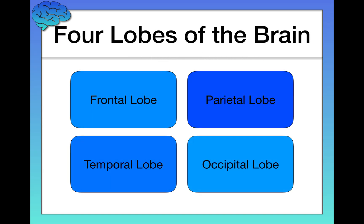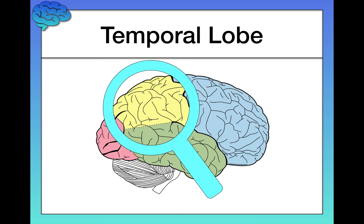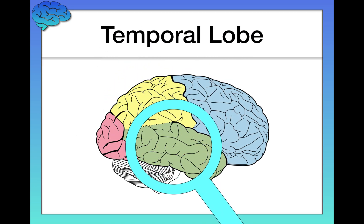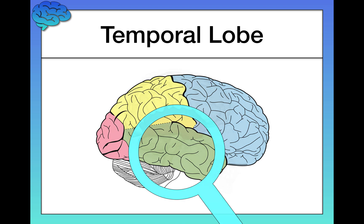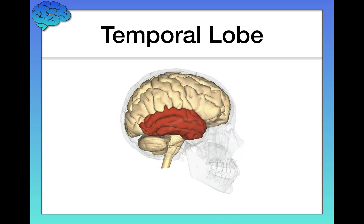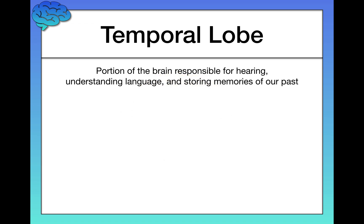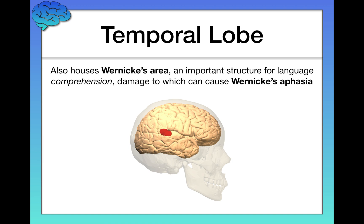The temporal lobe sits just beneath the parietal lobe and behind the frontal lobe — here's the skull view for context. The temporal lobe is important for hearing, understanding language, and storing memories of our past. Understanding language is where we get to Wernicke's area, which is important for language comprehension, not production. Damage to Wernicke's area can result in what we call Wernicke's aphasia.